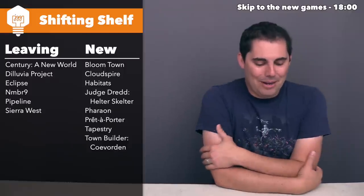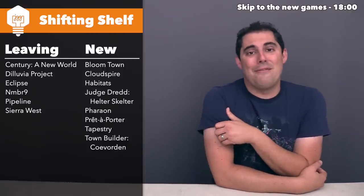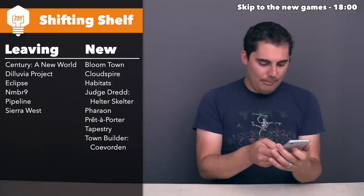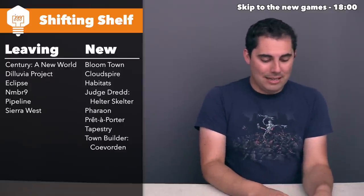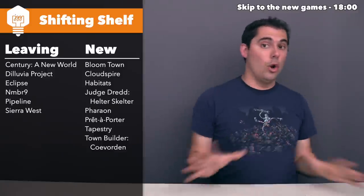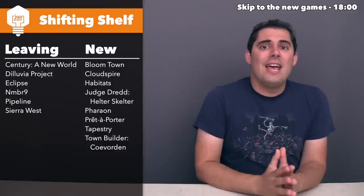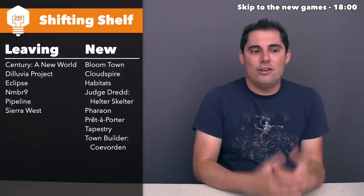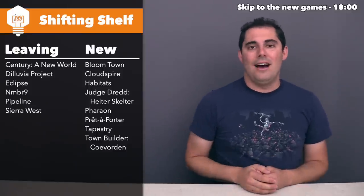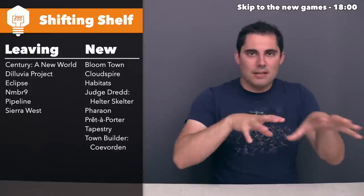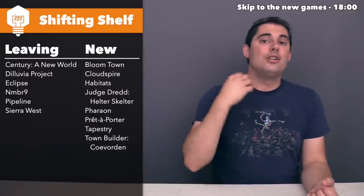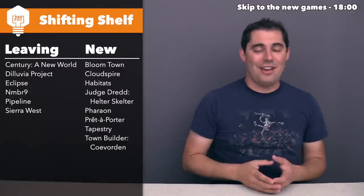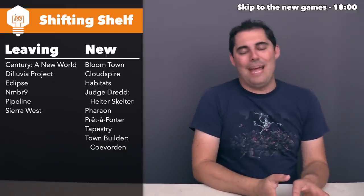The next game I'm getting rid of is Eclipse, which has been on my shelf forever. Looking at BoardGameGeek, I have 11 logged plays. It came out in 2011 and I bought it in 2011 — I was so excited about it. It plays up to six players, takes at least two hours and usually three to four with six players, and it's a Euro game of space exploration and conquest. You deploy different starships, fighters, and dreadnoughts, and you can customize their build — weapons, engines, shields, computers, plasma torpedoes — which was a big contentious thing about the game.